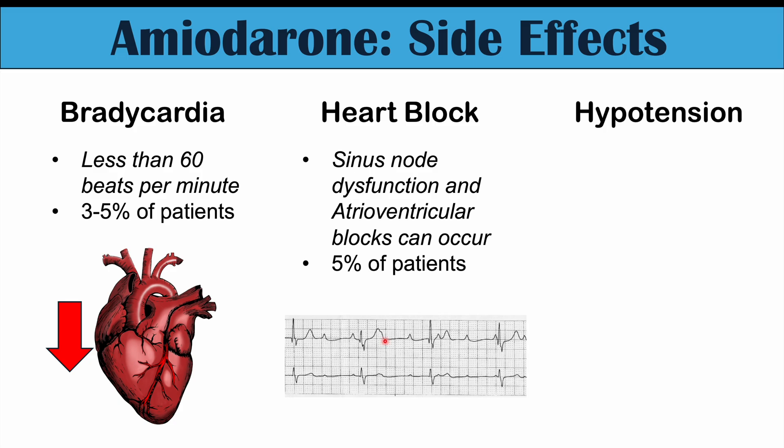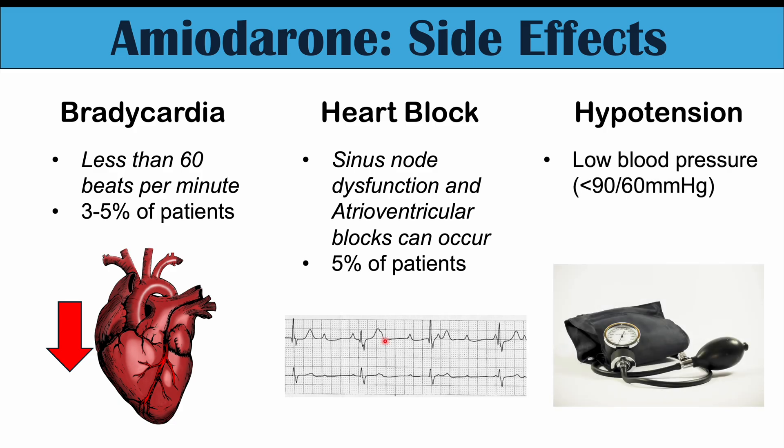Hypotension, or low blood pressure, can also occur with amiodarone use. This is defined as less than 90 over 60 mmHg. This can occur in a larger number of patients — up to 15% to 20% of patients can be affected by hypotension, which can cause further side effects we'll discuss later.